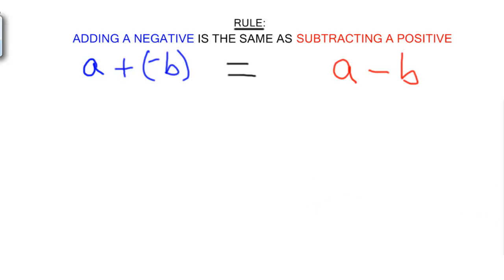Now, if you don't like those letters, let's do it with some numbers. Let's say I took 8 plus negative 4, and what this rule says is 8 plus negative 4 is no different than 8 minus 4. And I don't know about you, but to me 8 minus 4 is a lot easier to figure out than 8 plus negative 4.